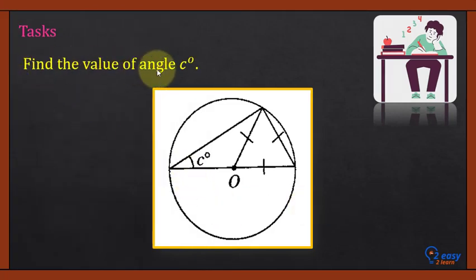So home task, find the value of angle c. Now observe this triangle. There are three lines. Which type of triangle is this? Think about it. Solve this question and write your answer in comment box and let me know your answer is correct or not.